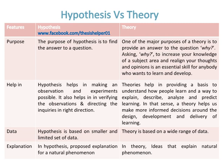A hypothesis helps in making observation and experiments possible. It also helps in verifying the observations and directing inquiries in the right direction. Theories help in providing a basis to understand how people learn and a way to explain, describe, analyze, and predict learning. In that sense, a theory helps us make more informed decisions around the design, development, and delivery of learning.